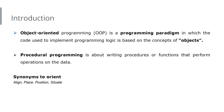We are going to extensively discuss objects, but first let's look at the word 'object-oriented.' Everything is oriented around an object. Synonyms for 'orient' include align, place, position, or situate. So in a more grammatical sense, object-oriented could also mean object-aligned, object-placed, object-positioned, or object-situated. Object-oriented programming means every programming logic we write will be aligned, situated, or placed around the concept of objects.